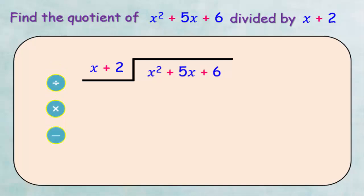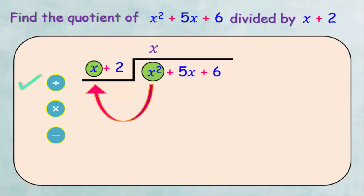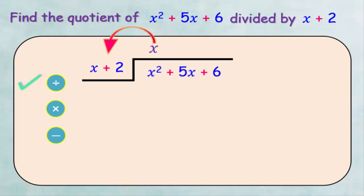First, dividing: we divide x squared by x, so we get x and write it in the quotient. Then the second step is to multiply x by the expression x plus 2, so we get x squared plus 2x and write it here. Don't forget to write like terms below each other.